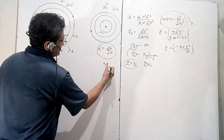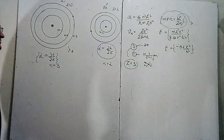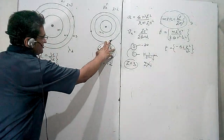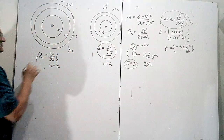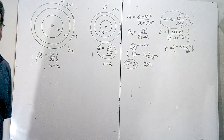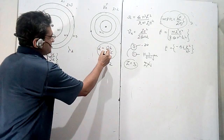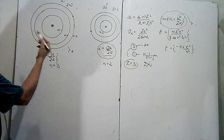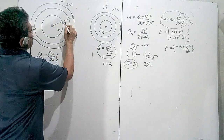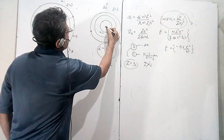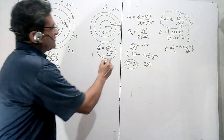Having identified the orbits (n = 3 for lithium, n = 2 for helium), the next step is to find the radius of each orbit. Let the radius for lithium be a_Li and for helium be a_He. The formula for orbital radius is r = a₀n²/z, where a₀ is the Bohr radius (the radius of the electron in the first orbit of hydrogen).